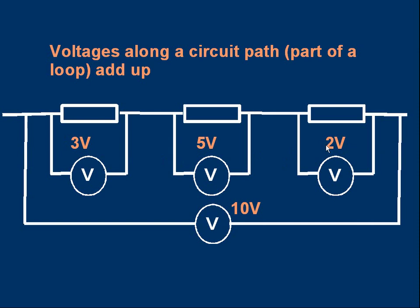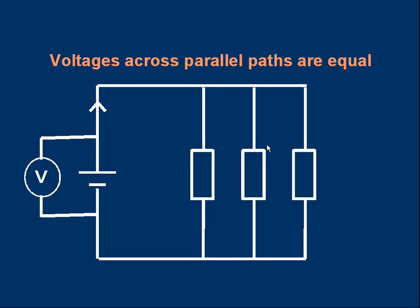When we look at components in parallel, the voltages across them are equal. Consider three resistors connected in parallel to a cell. Going around the first loop, the voltage across the first resistor equals the cell's voltage. Going around the second loop through the middle resistor — again, only one resistor — its voltage also equals the cell's voltage. The same applies to the right-hand resistor in the outer loop. So all three resistors have the same voltage, and this is true of any components in parallel: they always have the same voltage across them.